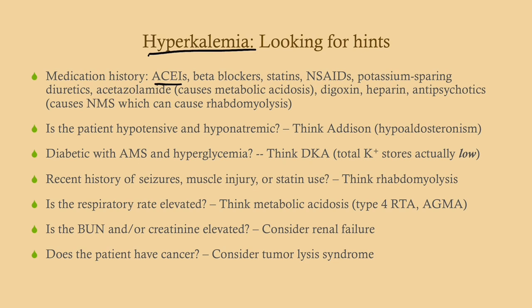If the patient has hyperkalemia and is hypotensive and hyponatremic, think of Addison's disease. Addison's will preserve potassium in the blood at the expense of sodium, so you're going to have fluid loss and hold on to potassium. If the patient is diabetic with altered mental status and hyperglycemia, think of DKA.